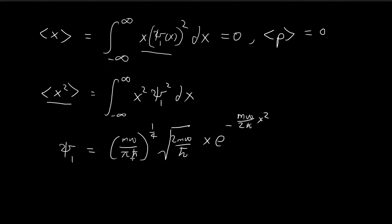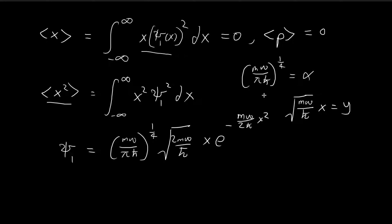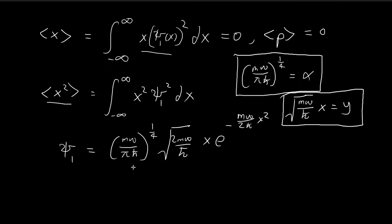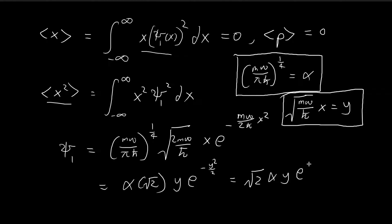I'm going to use a similar substitution to what we did before. I'm going to try to get rid of this giant term and let it be equal to α. We're also going to do the substitution where this square root times x equals y. So ξ₁ becomes α times the square root of 2, and the x times the square root term just becomes y, giving us y times e to the power of negative y squared over 2.